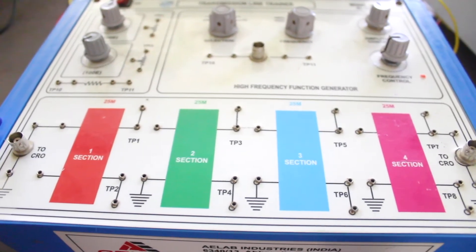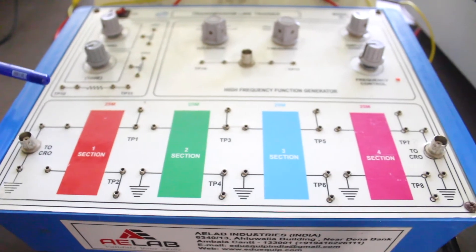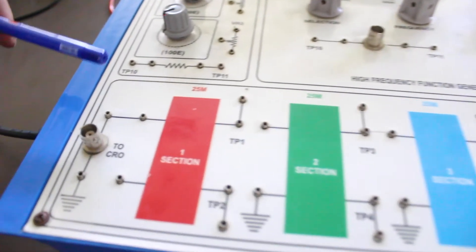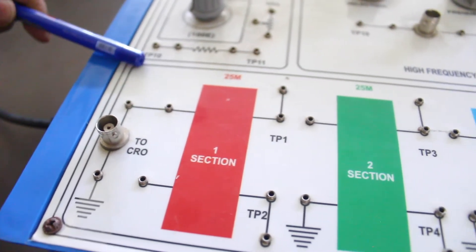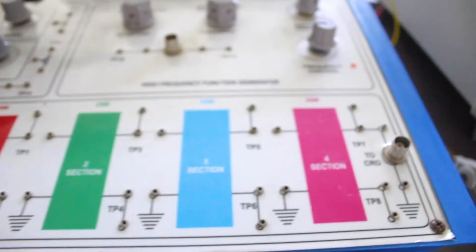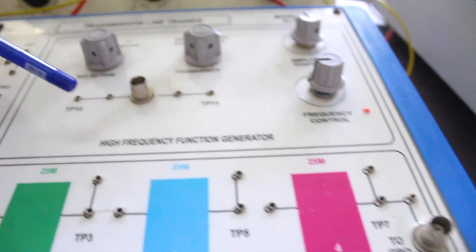We are having BNC connectors for input and output so that we will be able to connect this on CRO and we can see the output and input waveforms. We also have an inbuilt high frequency function generator which can be used to feed this transmission line.